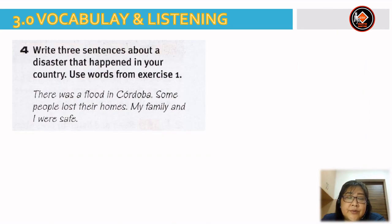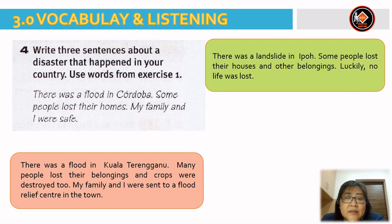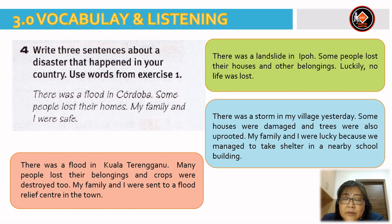Dear pupils, now write three sentences about a disaster that happened in your country. Use words from Exercise 1. Example: there was a flood in Cordoba. Some people lost their homes. My family and I were safe. Example answers: 1) There was a flood in Kuala Terengganu. Many people lost their belongings and crops were destroyed. My family and I were sent to a flood relief center in town. 2) There was a landslide in Ipoh. Some people lost their houses and belongings. Luckily, no life was lost. 3) There was a storm in my village yesterday. Some houses were damaged and trees were uprooted. My family and I took shelter in a nearby school building.